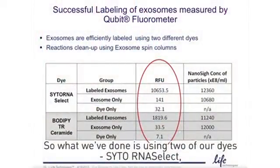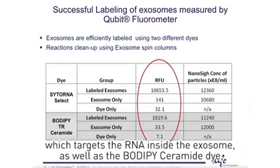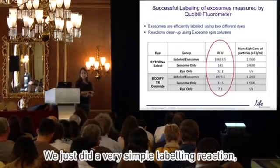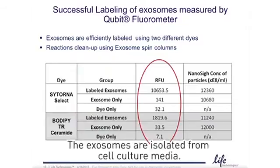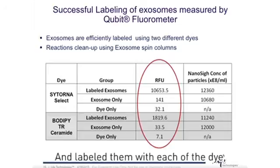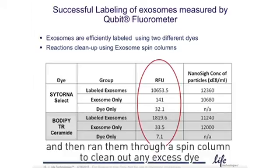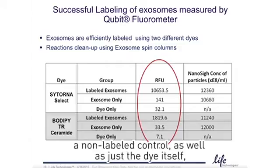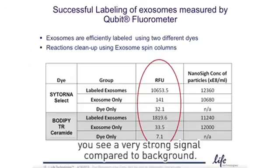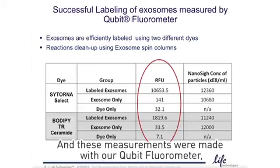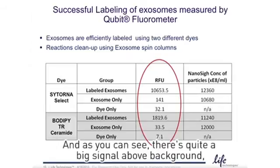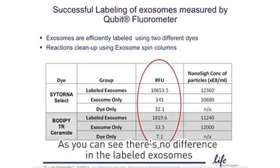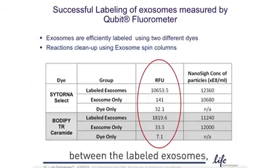What we've done is use two of our dyes: CytoRNA Select, which targets the RNA inside the exosome, as well as the BODIPY Ceramide dye, which targets the lipid bilayer of the exosome. We did a very simple labeling reaction, combining the dye with isolated exosomes from cell culture media, then ran them through a spin column to clean out any excess unbound dye. When you compare the labeled exosomes versus a non-labeled control as well as just the dye itself, measured with our Qubit fluorometer, you see a very strong signal compared to background, and no significant difference between labeled exosomes and exosome-only in NanoSight tracking, so labeling is not affecting the exosomes' ability to be tracked.